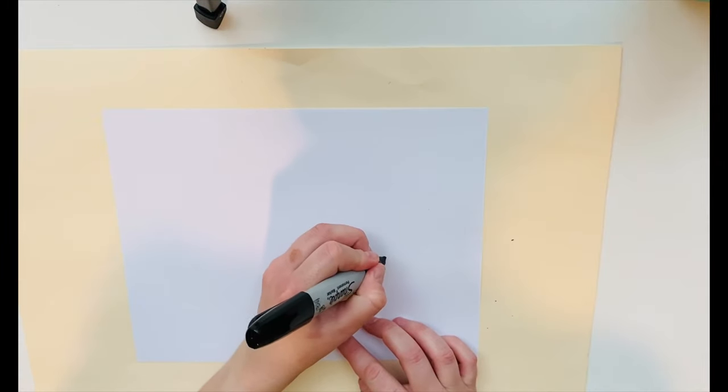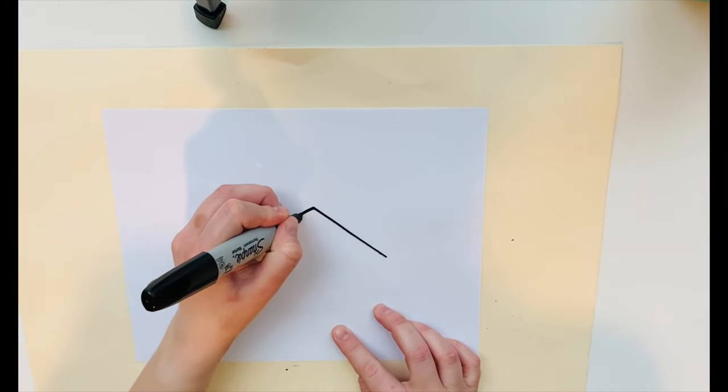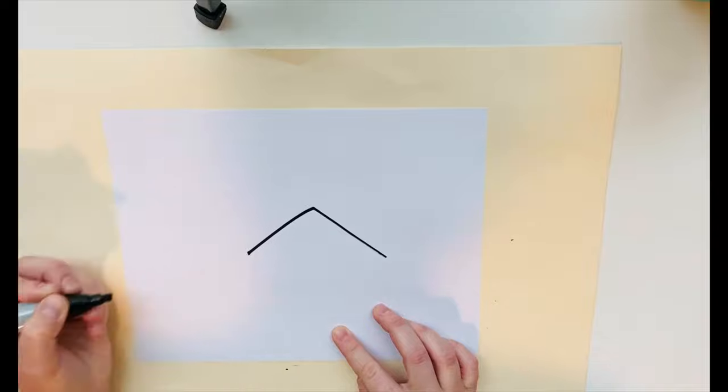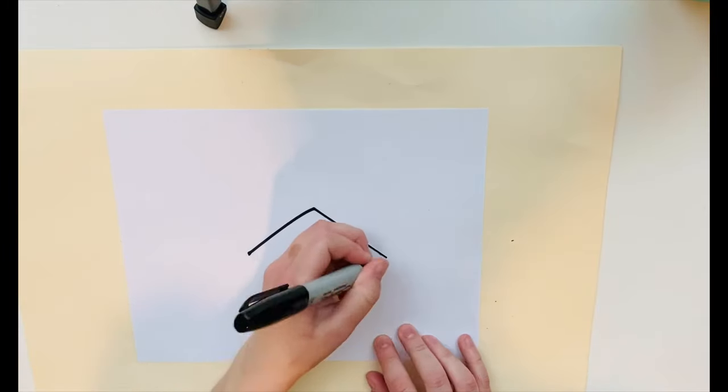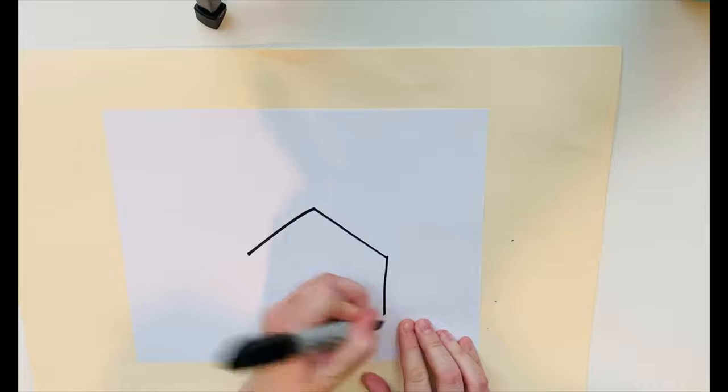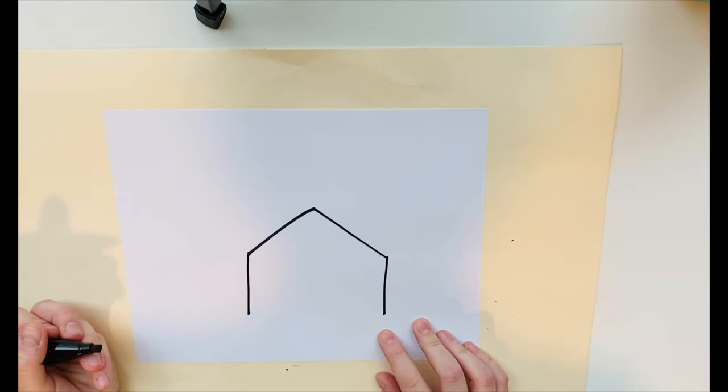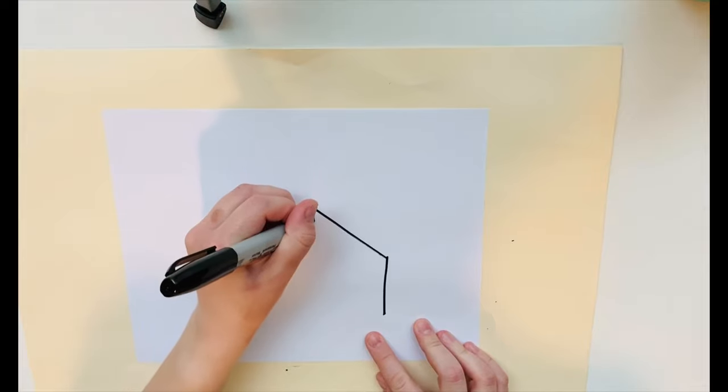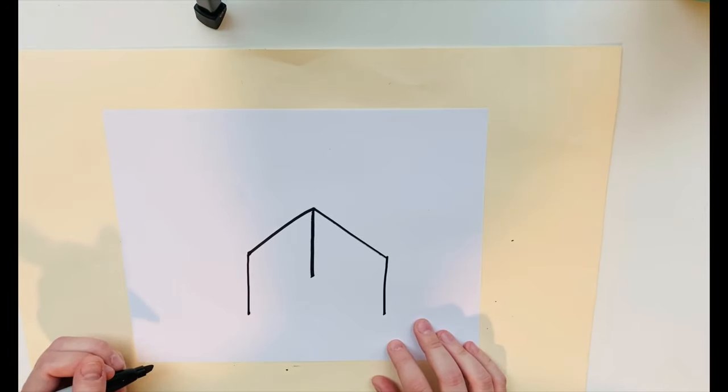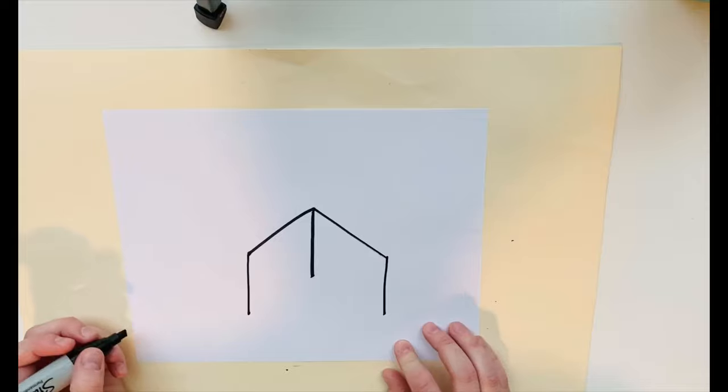So we're first going to start by drawing a wide triangle top line. Then we're going to draw two short straight lines that go down. And then in the middle, another short straight line that goes down, but is not as long as the others.